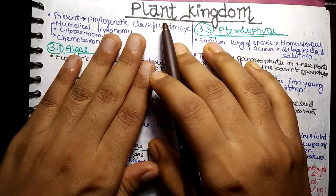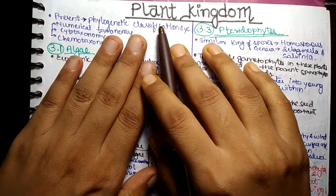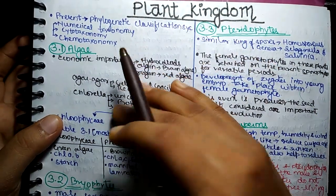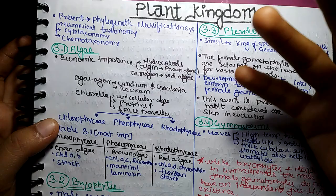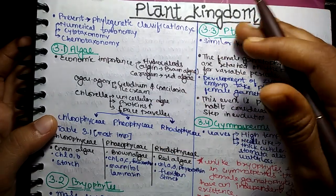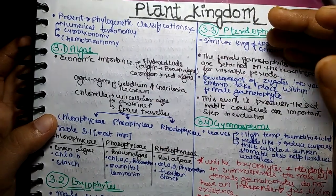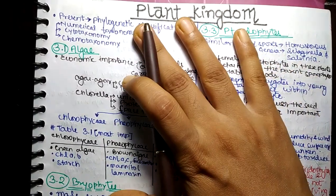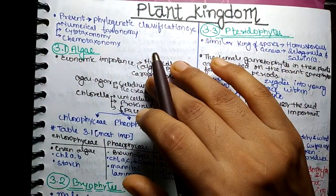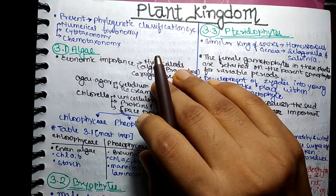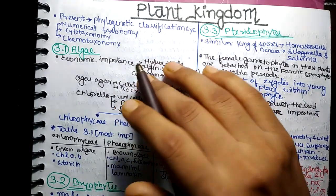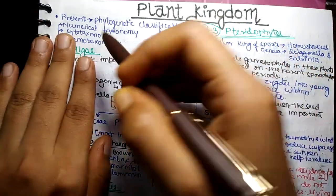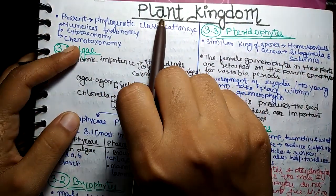Hello students, today I am going to study the chapter of Plant Kingdom. The important lines of this chapter — the chapter will be very big and you will have to read it before. Before you read it, you will have to read it and solve it. Then for revision, you can use it for revision. Now let's start with Plant Kingdom.